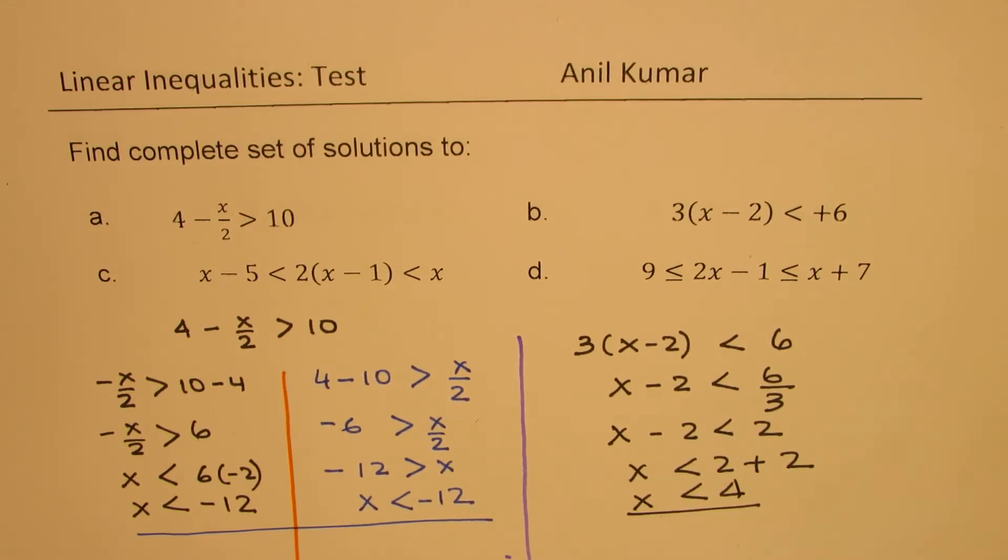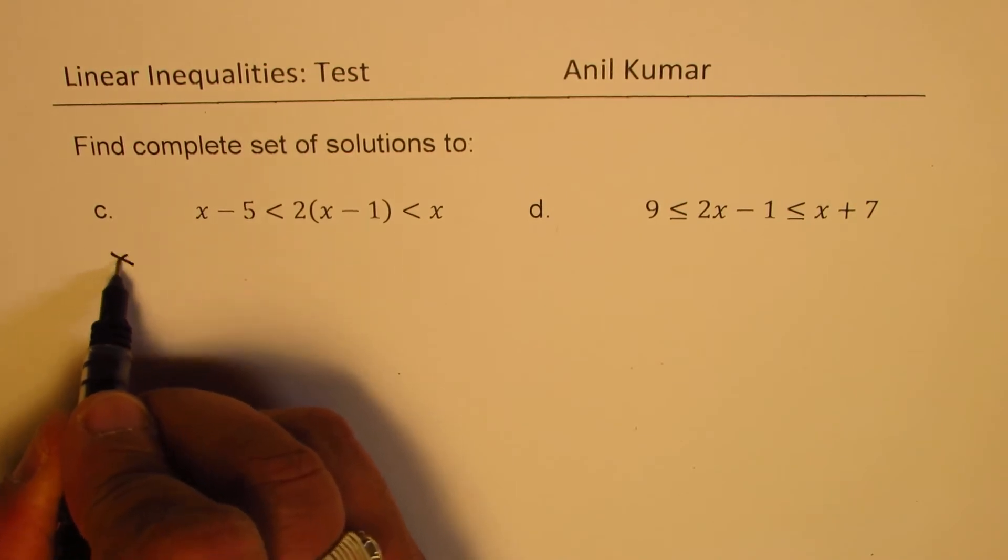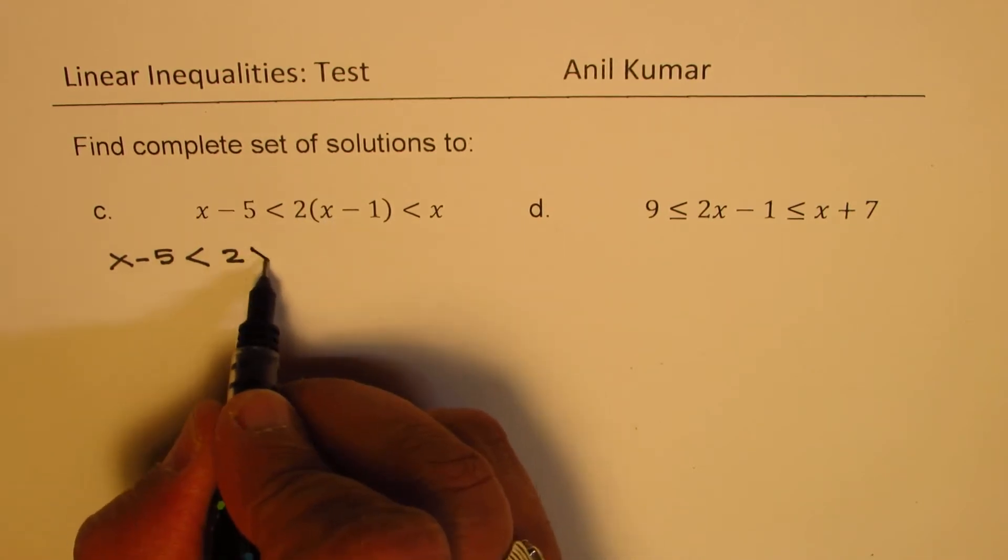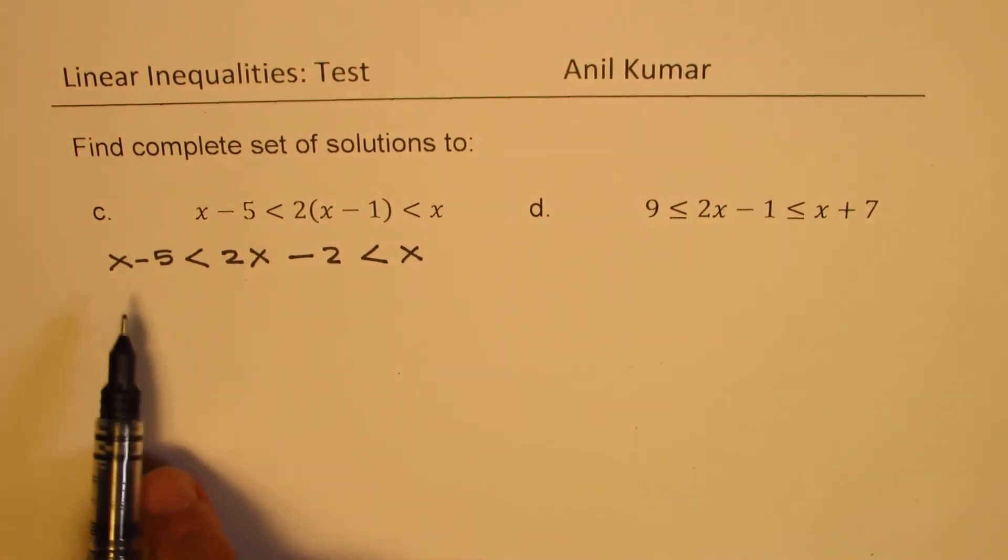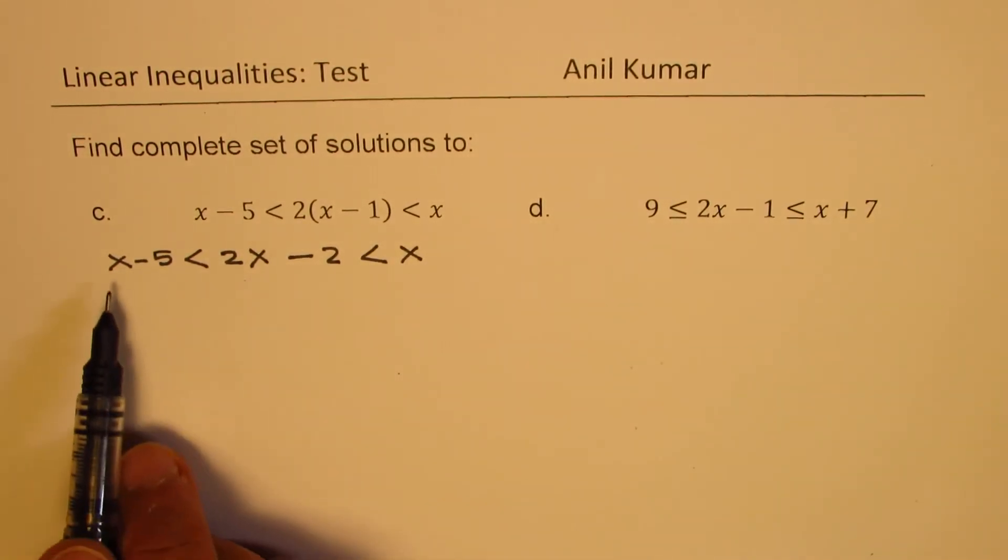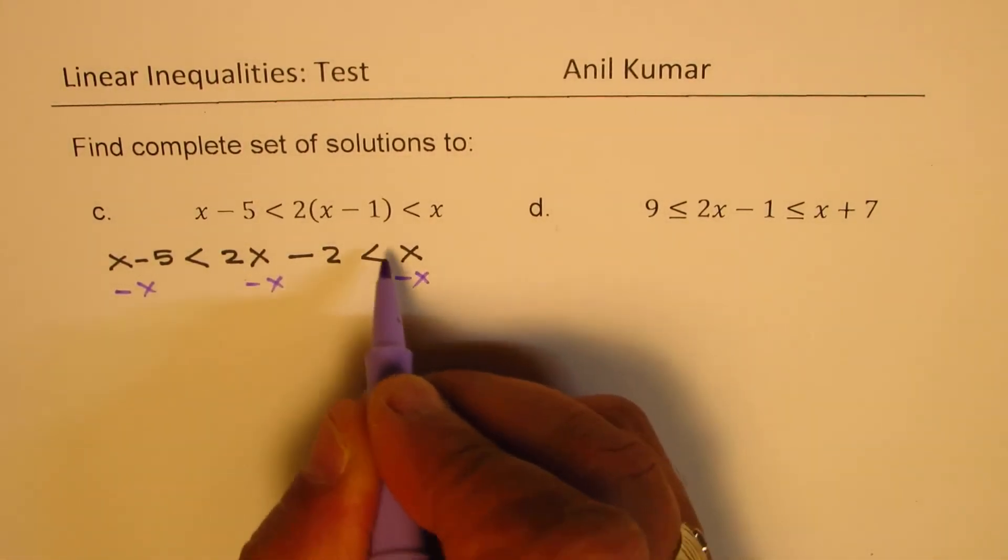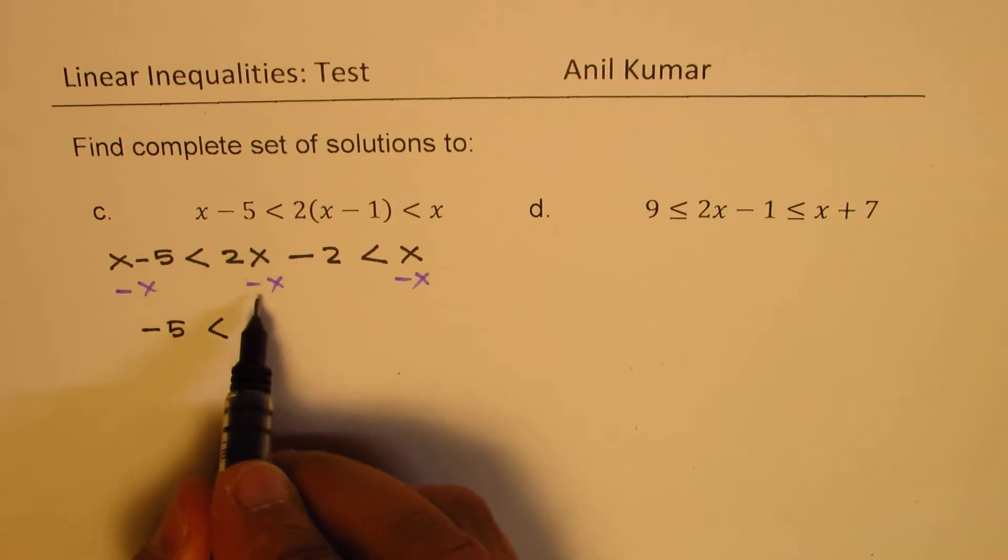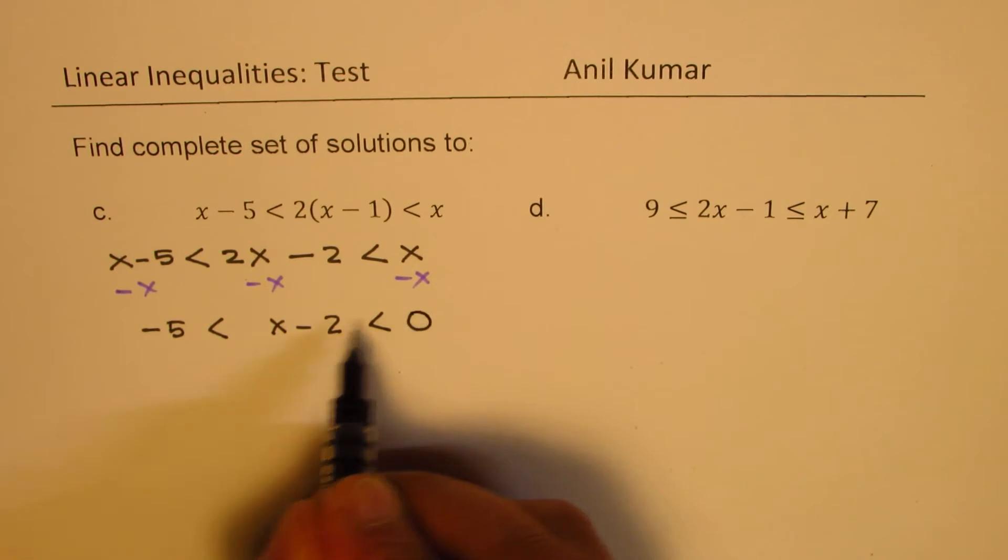Now let's look into the solution of double inequalities. The first one here is we have x minus 5 which should be less than 2 times, let's open the bracket, we get 2 times x minus 2 less than x. Now in this case we could actually take away x from all the sides. We could do minus x minus x minus x. So now it becomes much simpler. So we have minus 5 is less than 2x minus x is x, and here we have minus 2 which is less than 0.